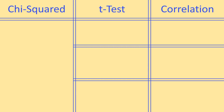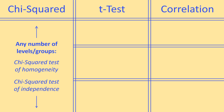Once you know which family you're dealing with, you can start to drill down to find a particular test appropriate for your experiment. Chi-squared is easy because there are the same two tests for any number of groups or levels. In the t-test family, we have to know how many groups the independent variable considers. If you're only looking at one sample group, you would use a one-sample t-test.